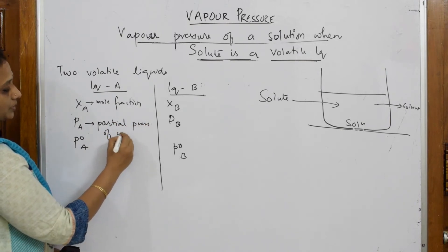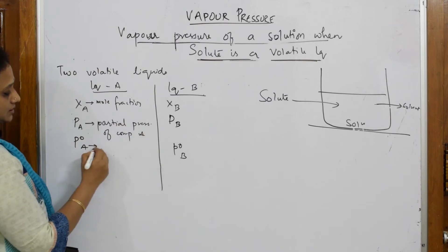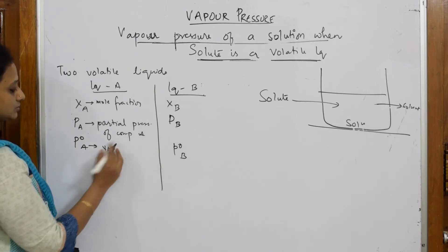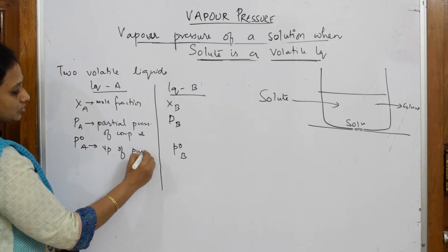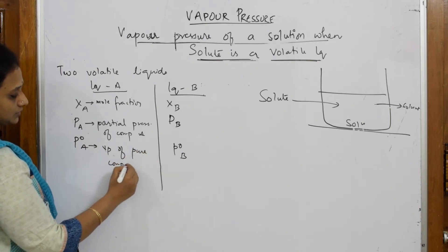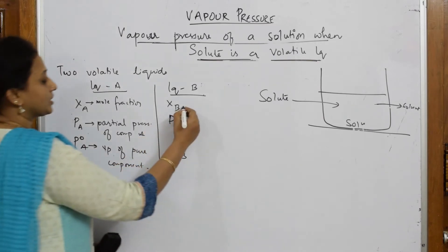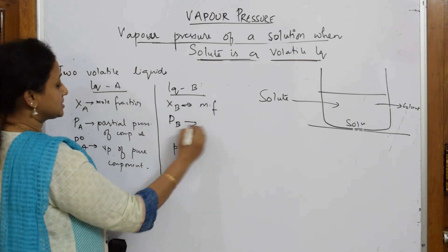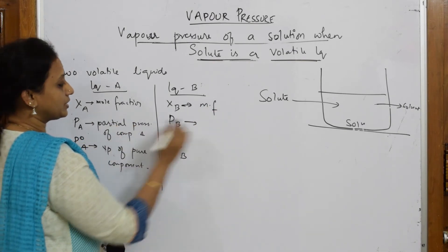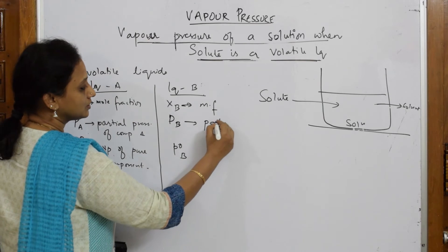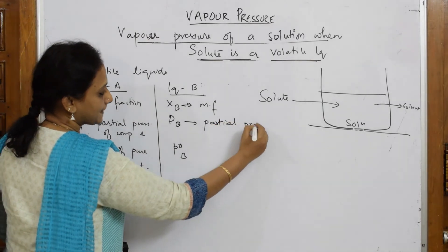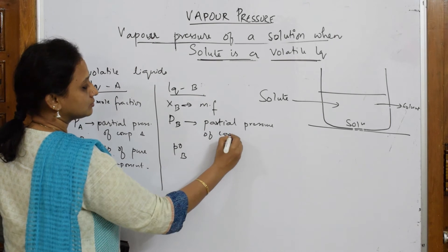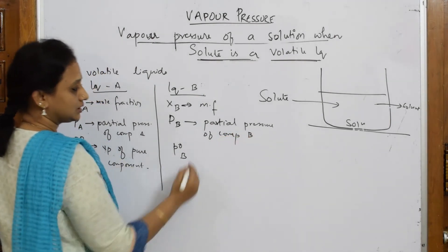So to clarify the notation: X-A is the mole fraction of component A, and the partial pressure of component A is P-A, while the vapor pressure of pure component A is P0A. Similarly, X-B is the mole fraction of component B, and the partial pressure of component B is P-B, while the vapor pressure of pure component B is P0B.